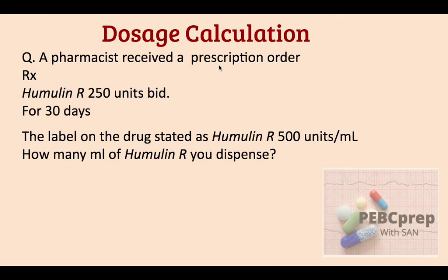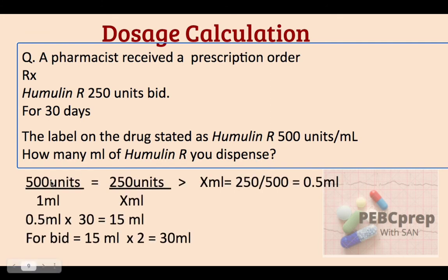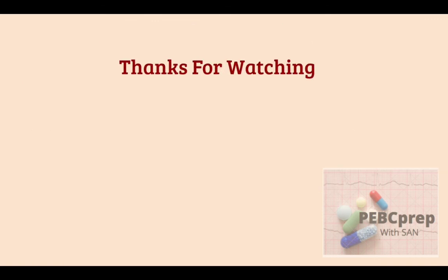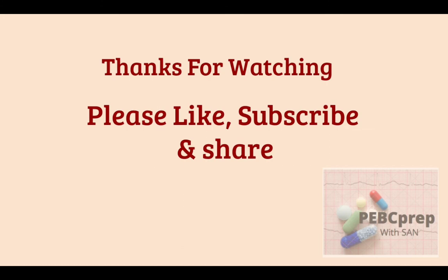A pharmacist receives a prescription order for Humulin R 250 units BID for 30 days. The label states Humulin R 500 units per ml. How many milliliters will you dispense? Solution: 250 units ÷ 500 units/ml = 0.5 ml per dose × 30 days × 2 (BID) = 30 ml total to dispense. Thanks for watching — please like, subscribe, and share, and keep studying.